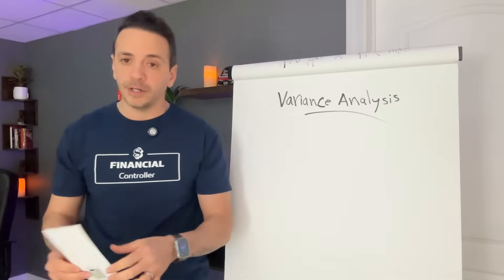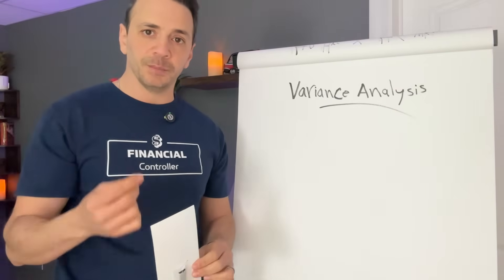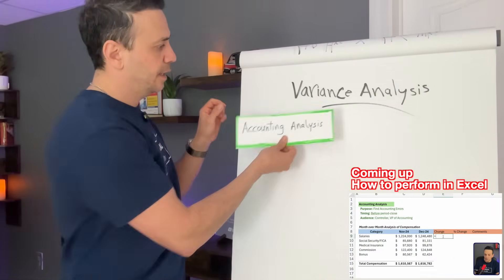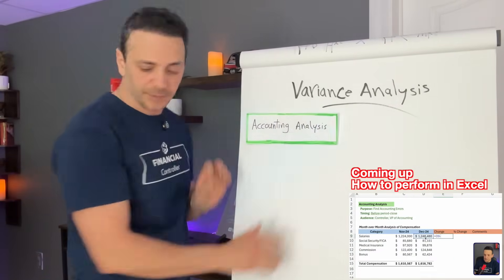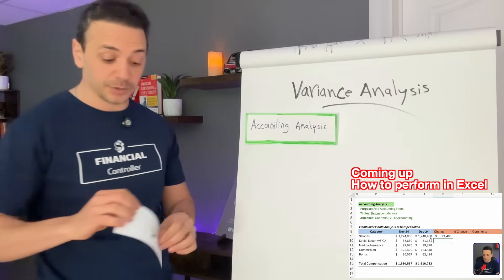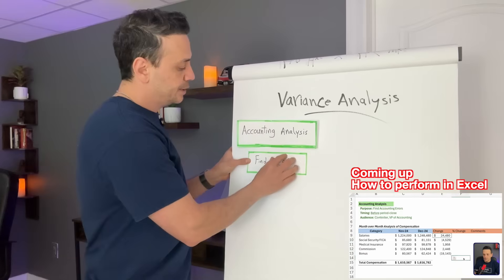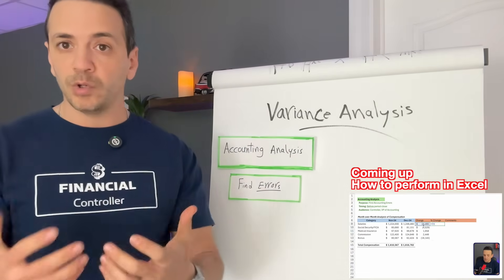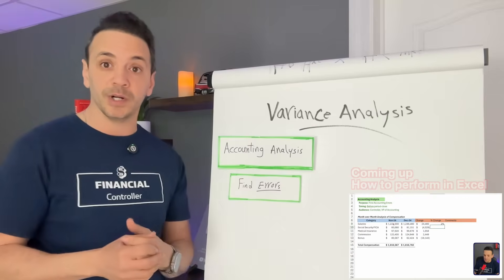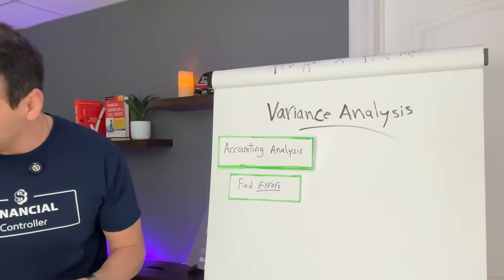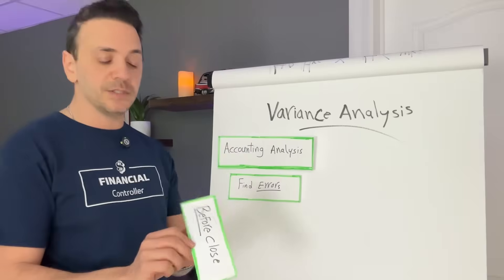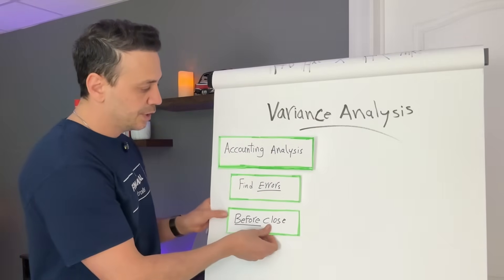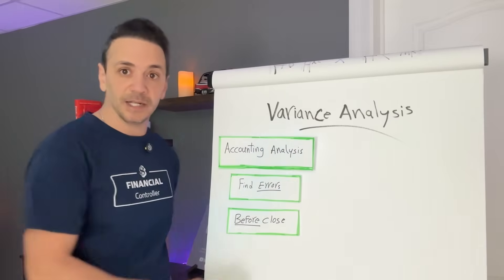To give you a little visual here, there are two types of variance analyses that we perform as accountants. The first one is an accounting analysis, and the purpose of this type of analysis is to find errors — things like missed accruals, double bookings, or anything that will cause a variance in your books or records. The timing of this is going to be before the close, so before you finalize the books or records.